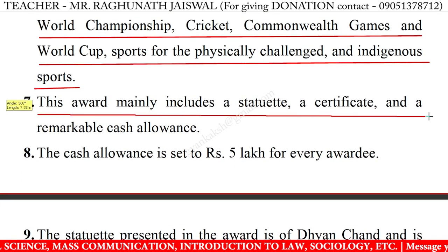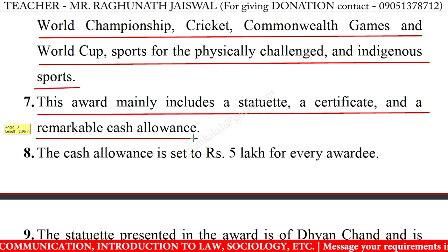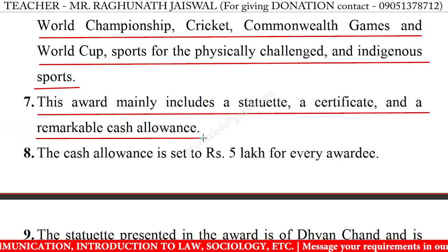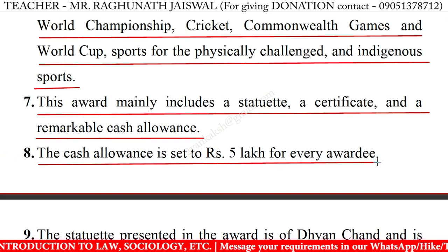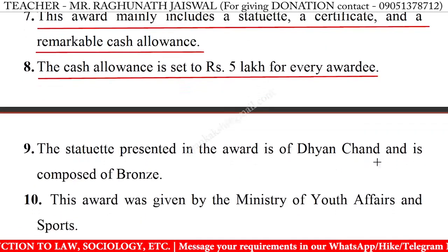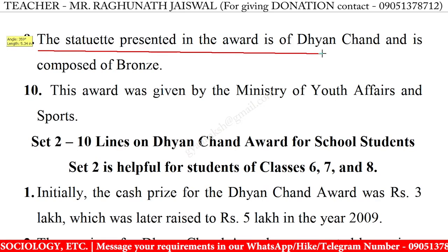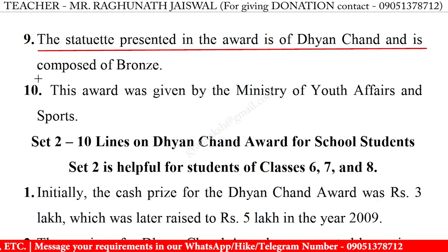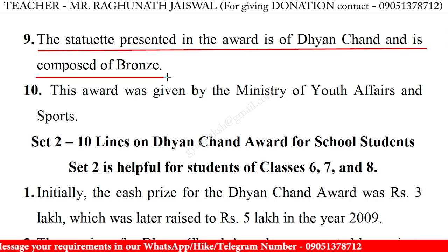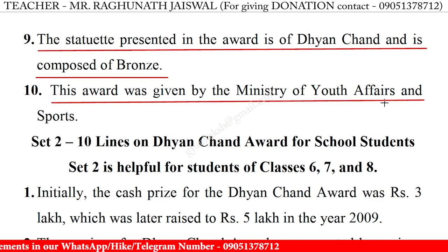This award mainly includes a statute, a certificate, and a remarkable cash allowance. The cash allowance is set to rupees 5 lakh for every awardee. The statute presented in the award is of Dhyanchand and is composed of bronze.